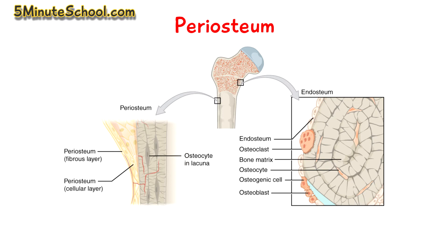The inner osteogenic layer is more cellular in nature, and the cells here really have an influence in bone formation and bone repair. In this layer we have osteoblasts, mesenchymal skeletal progenitor cells, and more fibroblasts and nerves.